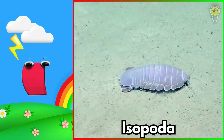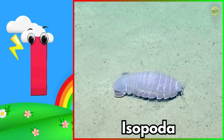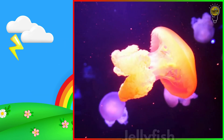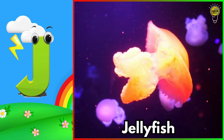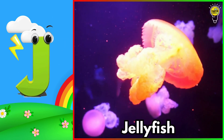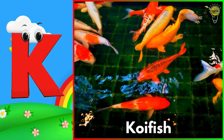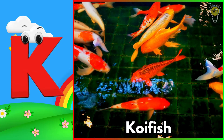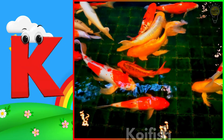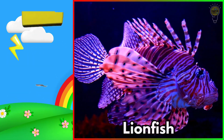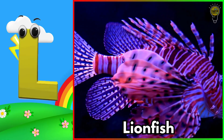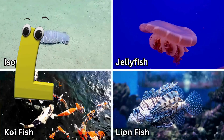I is for isopod. Eh, eh, isopod. J is for jellyfish. Juh, juh, jellyfish. K is for koi fish. Kuh, kuh, koi fish. L is for lionfish. Luh, luh, lionfish.